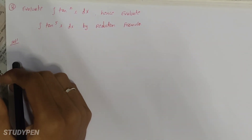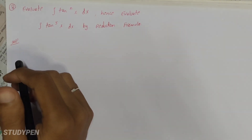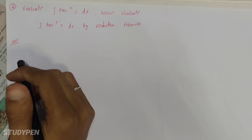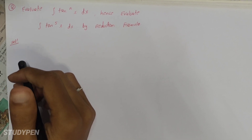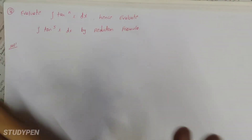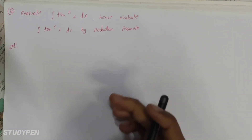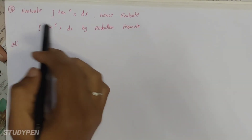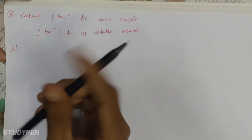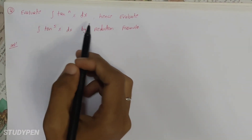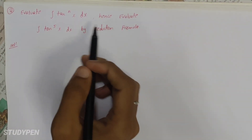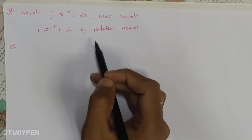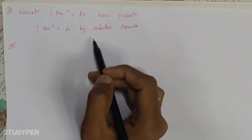So friends, this is the second sum. We have a problem with integration — total 6. In problem 6, we have a problem with tan. We evaluate the integration of tan power of nx dx. Hence, we evaluate the integration of tan power of 5x dx by reduction formula.